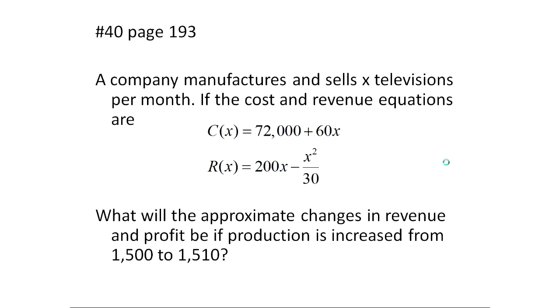So I picked a problem from the textbook, and in this problem we're told that a company manufactures and sells x televisions per month. I want to pay attention to that - it tells me what x represents. We're given the cost and revenue equations, and we want to know the approximate changes in revenue and profit if we change production. Now, changing production is a change in x because we're manufacturing and selling x televisions. So when we change production from 1,500 to 1,510, this is a change in x. And then we're trying to find the approximate - that tells me we're thinking about a dy type of thing, a differential.